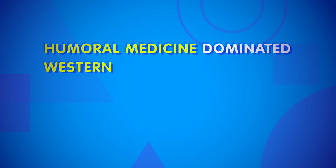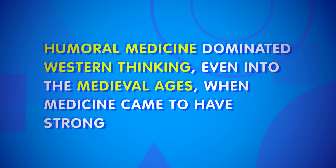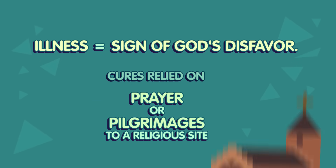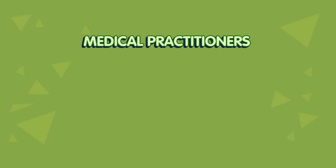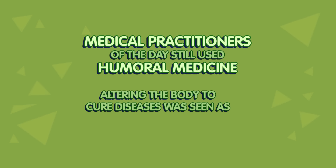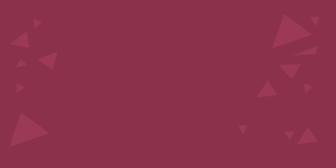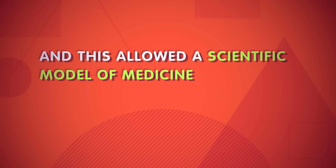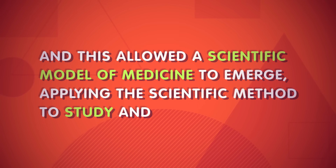Humoral medicine dominated Western thinking even into the medieval ages, when medicine came to have strong ties to religion. Many interpreted illness as a sign of God's disfavor, and cures often relied on prayer or pilgrimages to a religious site. While medical practitioners of the day still used humoral medicine, altering the body to cure diseases was seen as tampering with God's will. Over time, a more scientific approach to medical treatment emerged, building on philosopher René Descartes' theory of mind-body dualism. This was a new belief that the body was separate from the mind and the soul, and this allowed a scientific model of medicine to emerge, applying the scientific method to study and treat disease.